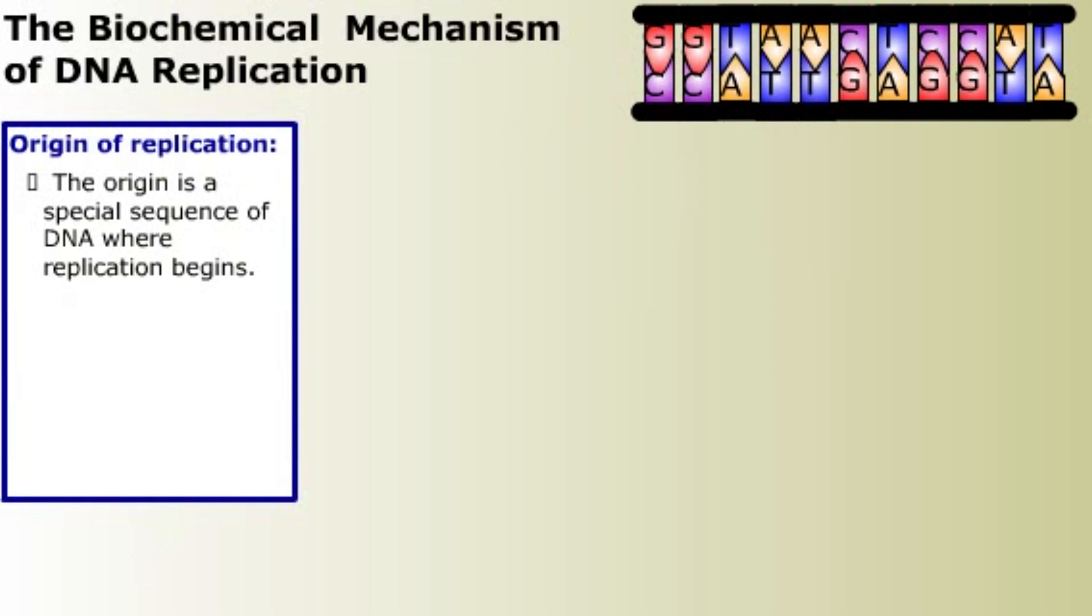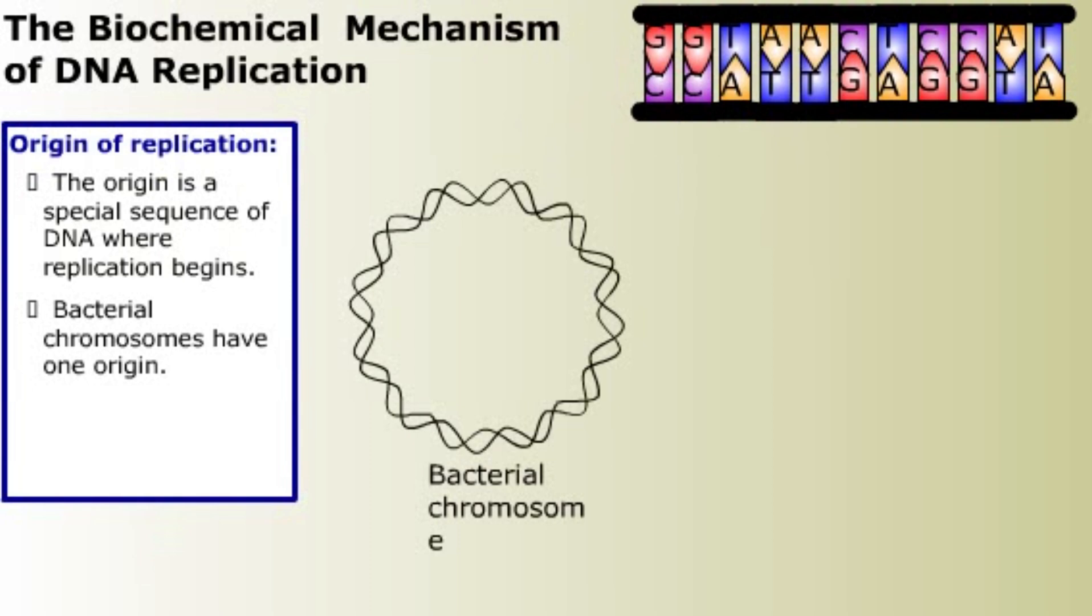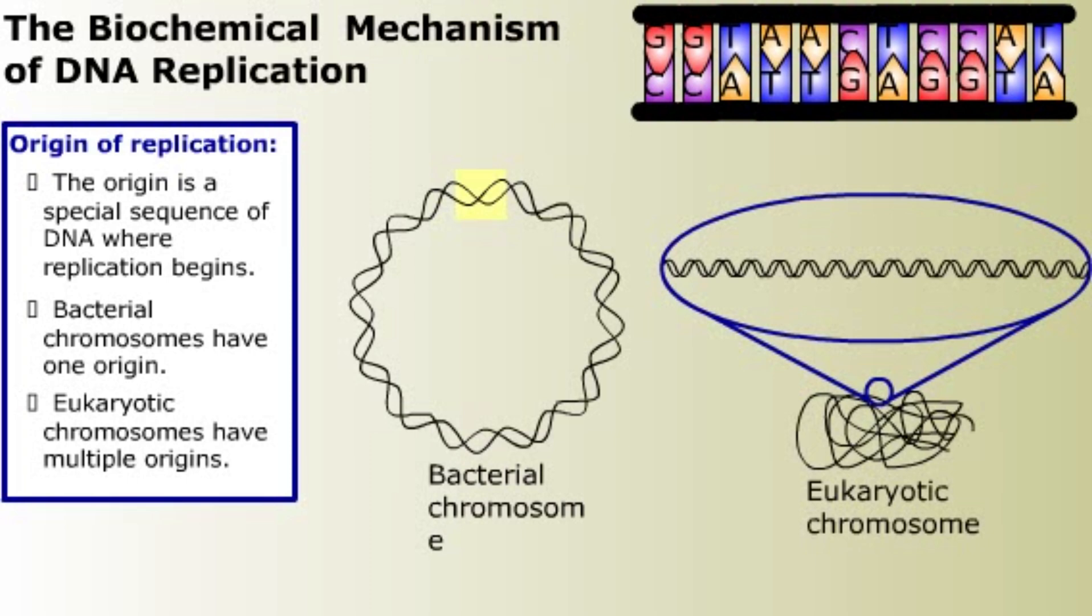Replication begins at special sequences of DNA called origins of replication. Bacterial chromosomes have one origin of replication. Eukaryotic chromosomes, which are much larger and have more DNA to replicate, have many origins.